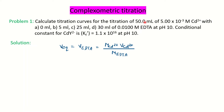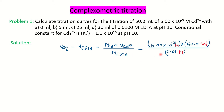First, let's find how much volume of titrant is required at the equivalence point using the formula M1V1 = M2V2, where M·V of the metal equals M·V of the titrant. The molarity of EDTA is given as 0.01 M. Plugging in the data, the volume of EDTA at equivalence point is 25 ml. So: 0 ml is the start, 5 ml is before equivalence point, and 30 ml is after equivalence point.